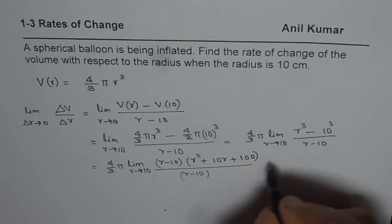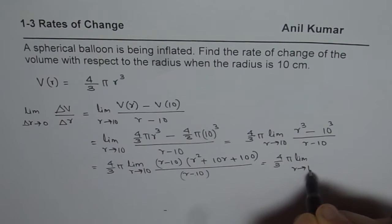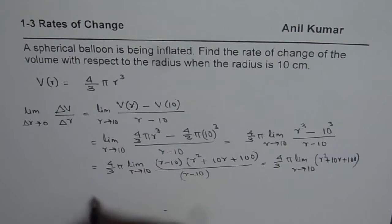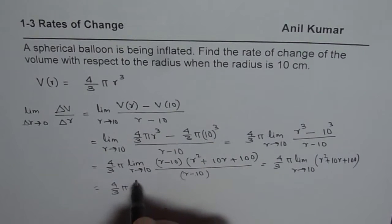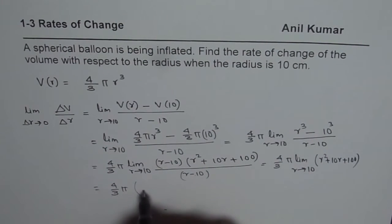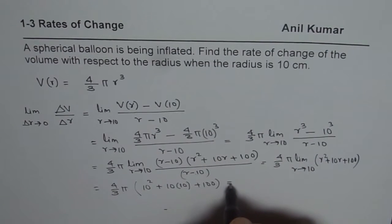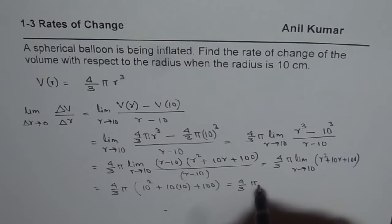Now we can simplify by cancelling them. So we get 4 by 3 pi limit r approaches 10, so we get 4 by 3 pi, now we can substitute 10 here, so we get 10 square plus 10 times 10, r is 10, plus 100. That is 400, that is 4 by 3 pi, and that is 100 plus 100 plus 100, that is 300.